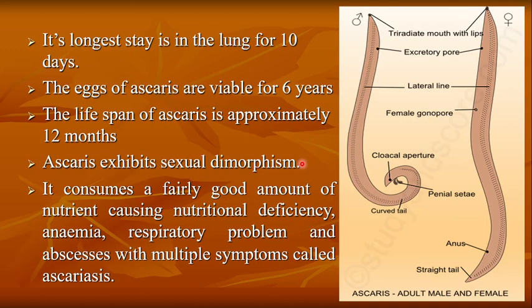Ascaris exhibits sexual dimorphism. It consumes a very good amount of nutrients, causing nutritional deficiency, anemia, respiratory problems, and abscesses — with multiple symptoms collectively called ascariasis. As an intestinal endoparasite, it causes nutritional deficiency, and the person becomes anemic and shows respiratory problems.